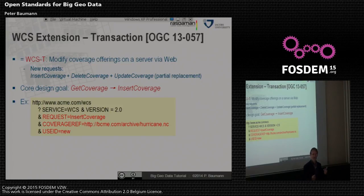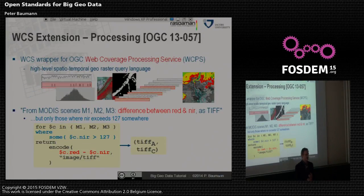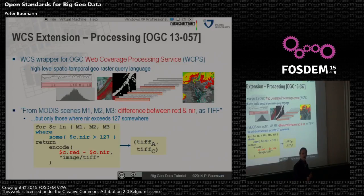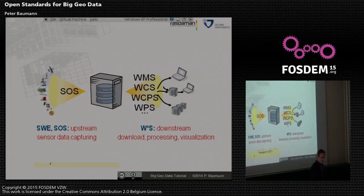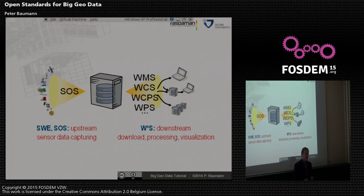One extension very dear to me is the analytics part: the Web Coverage Processing Service (WCPS), which is a query language for raster data with geosemantics. It may remind you of XQuery — and actually we cover it with XQuery — so you can do metadata and data search, filter with predicates, do processing, and return the result. This fits into the big picture where SOS handles upstream sensor capturing, you grab and transform data into standard OGC formats, and then serve it downstream via the W*S services.